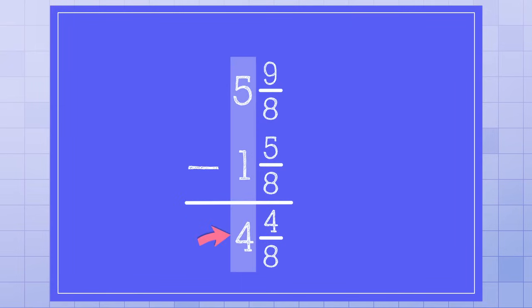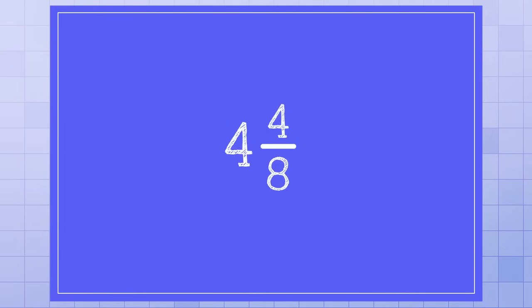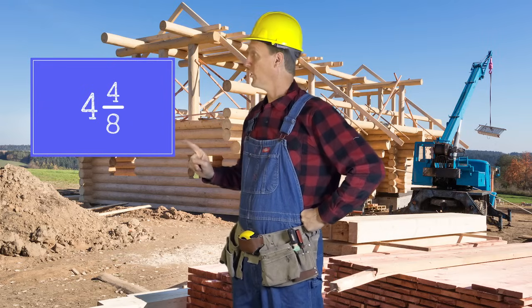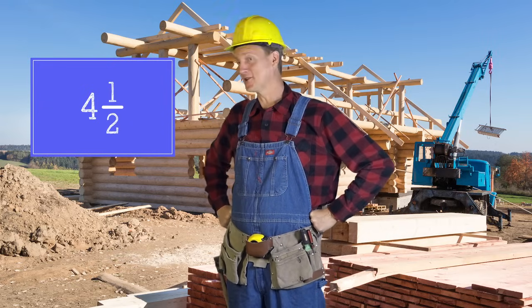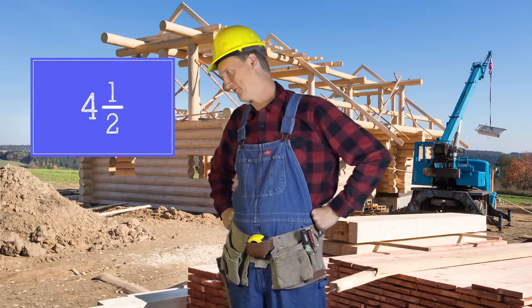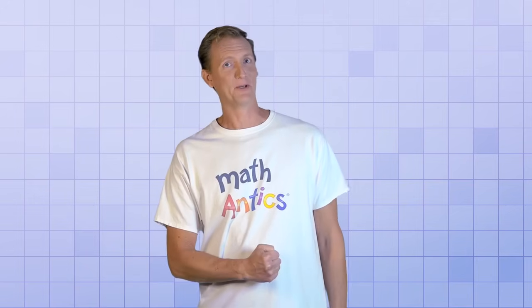And then I can subtract the whole numbers. 5 minus 1 is 4, so the answer is 4 and 4 eighths. Does that look right to you Richard? You're right! 4 eighths can simplify to 1 half. So my final answer is 4 and 1 half. Thanks for your help Richard! Good job Rob, the builder!